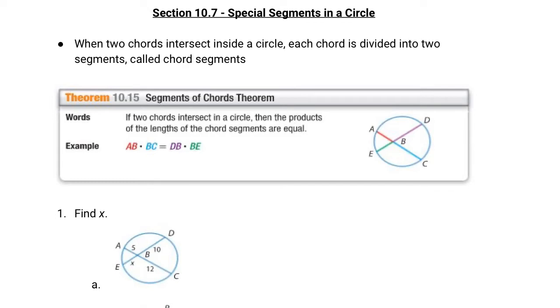When two chords intersect inside a circle, each chord is divided into two segments called chord segments. So if you look at theorem 10.15 here, AB times BC, two chord segments, are going to equal EB times BD, also two chord segments. It says if two chords intersect in a circle like AC and ED do, then the products of the lengths of these chord segments are equal.